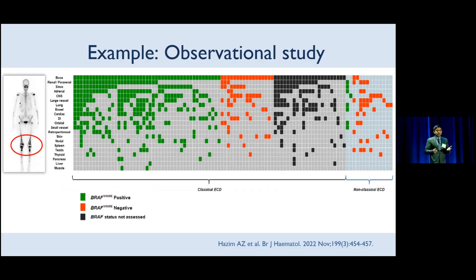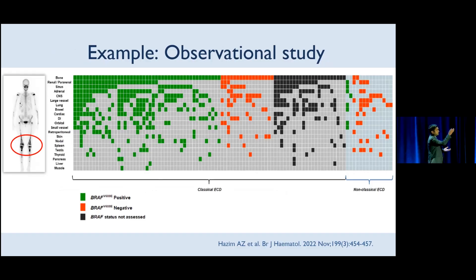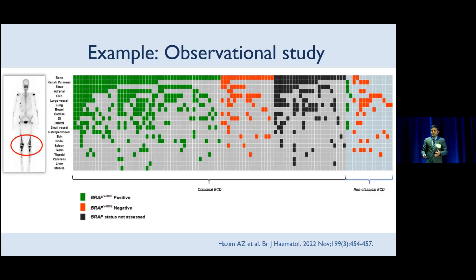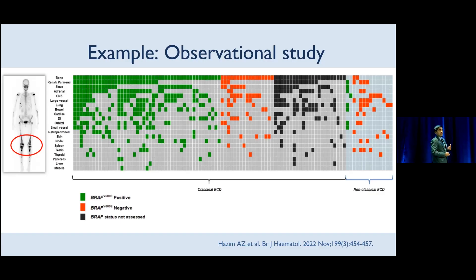Another key example of an observational study from our group showed that classic ECD — as Drs. Erdheim and Chester described, with knee-bone involvement — is actually mostly driven by the BRAF V600E mutation. In this study, each vertical line represents one patient from a cohort of 101 individuals with ECD. We found that 75% of individuals with knee-bone involvement had the BRAF V600E mutation, compared with just 14% among those without that involvement. Looking at organ involvement, heart involvement is very strongly correlated with the BRAF V600E mutation. This is just another example of an observational study.